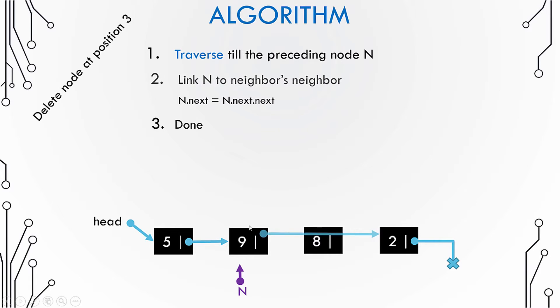So next of n is 8 and next of 8 is 2. So therefore, 9's next would now be 2 after this statement.